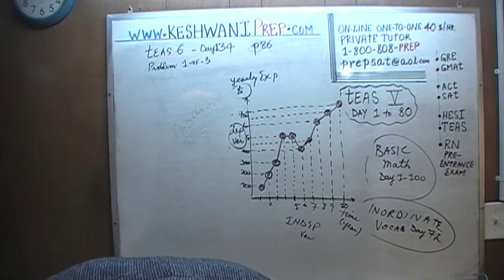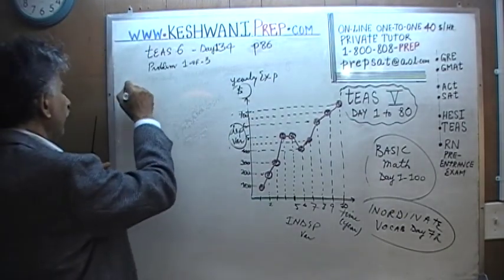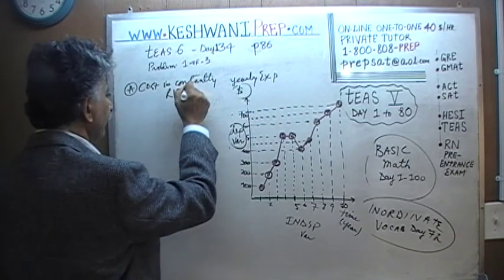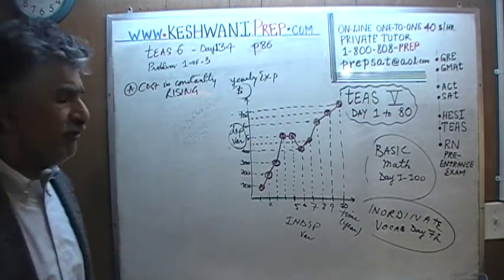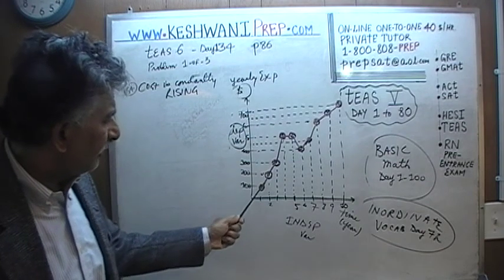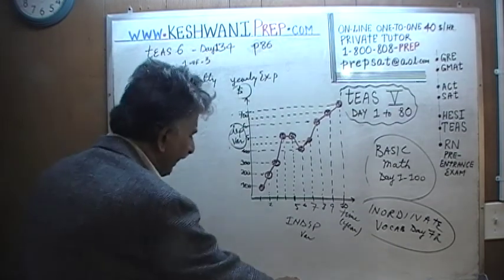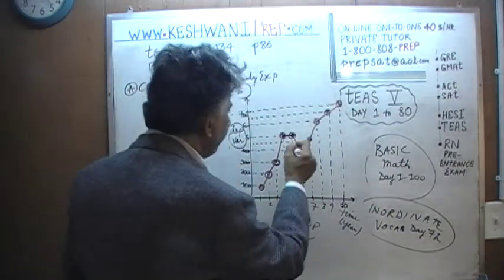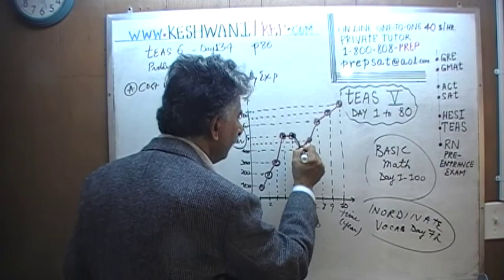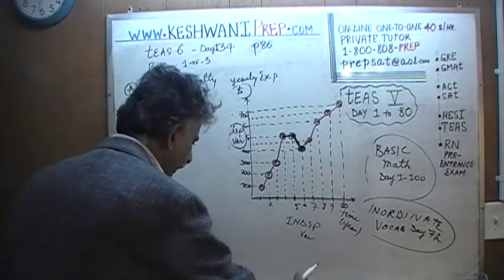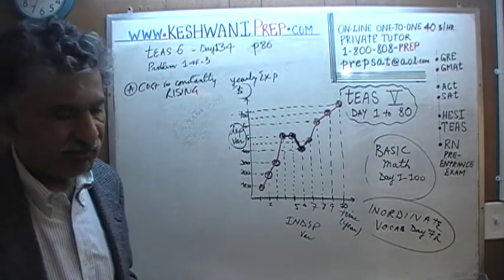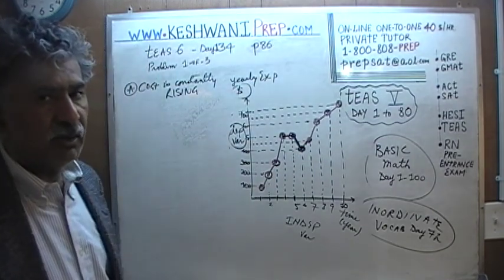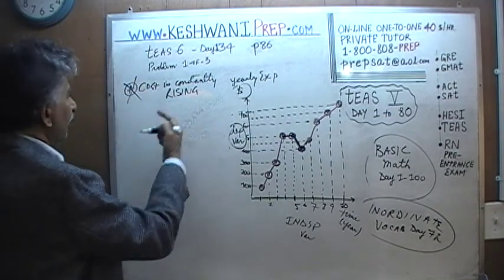Answer choice A says the cost to maintain a machine is constantly rising. That is obviously not the case. It did rise from year one through year four, but between year four and year five it was flat — it did not rise. Not only that, but the following year it fell. So there are two occasions when it's not true: from year four to year five it was flat, and then it fell. Therefore, answer A is wrong.